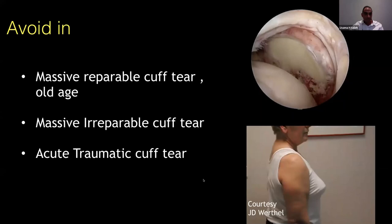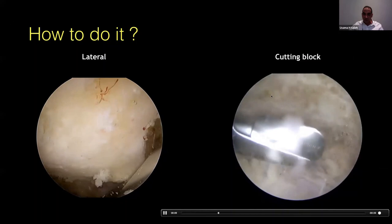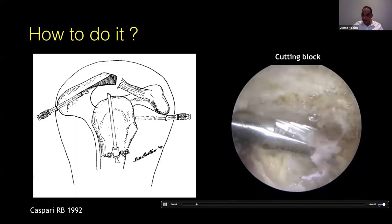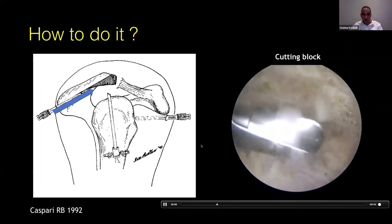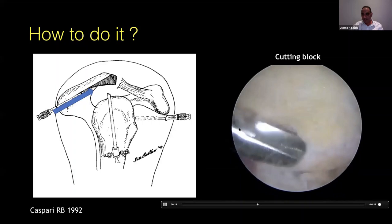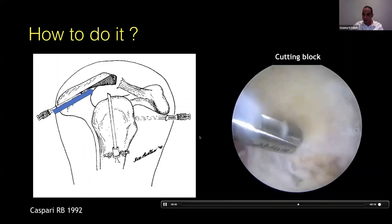How do I do it? There are two described techniques: viewing from the lateral portal with working from posterior, or the cutting block technique viewing from lateral and working from posterior. I prefer the cutting block technique because it gives me a landmark — you have a flat surface on the posterior surface of the acromion, follow this flat surface and keep going forward with your shaver until the whole surface is in one line, turning the type III acromion into a type I. This is the most reproducible way to do acromioplasty.